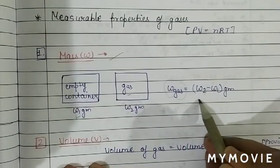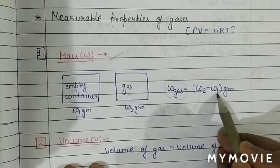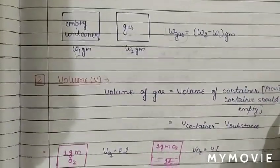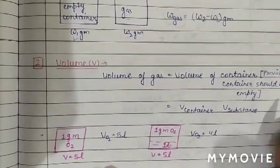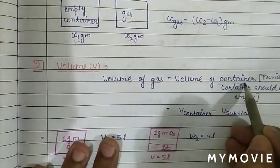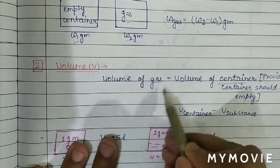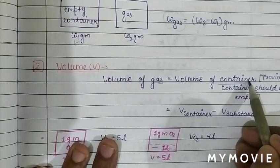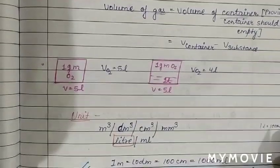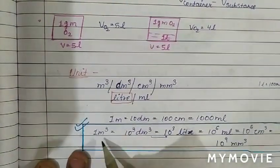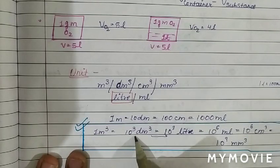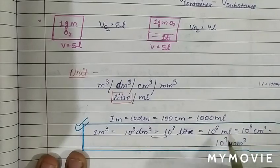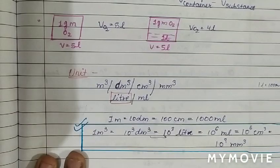The next measurable property is volume. The volume of a gas is equal to the volume of its container, assuming ideal behavior. For unit conversions: 1 m³ = 10³ dm³ = 1000 L = 10⁶ mL = 10⁶ cm³. These units are used during calculations.